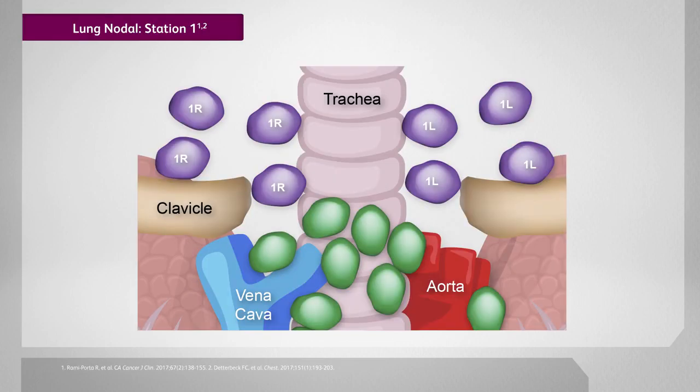Here we consider the mediastinal lymph node stations. Level 1 shows the supraclavicular lymph nodes that are located above the clavicle. Lymph nodes in this region can at times be difficult to contour. It's always helpful to have a PET CT scan to adequately define the volume of lymph node involved. When treating these supraclavicular lymph nodes to the full radiation dose, you have to be cognizant of the brachial plexus — it's important to contour that structure and make sure you're not going above a maximum point dose of 66 Gray.